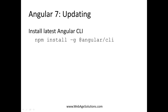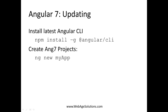To update to Angular 7, you want to first start by updating Angular CLI. You can use this command to do that. If you already have a version of Angular CLI installed, you'll want to uninstall that first and then run this command. Once you have Angular CLI installed, you can create new Angular 7 projects using ng new and then the name of your project.